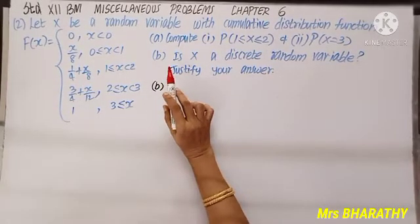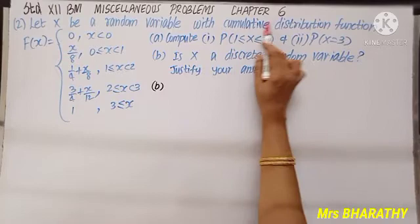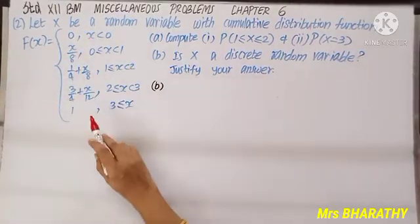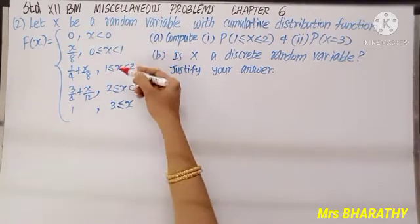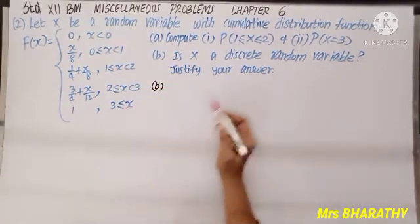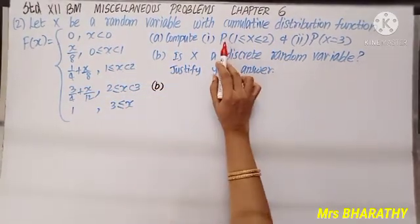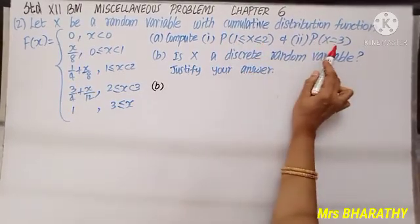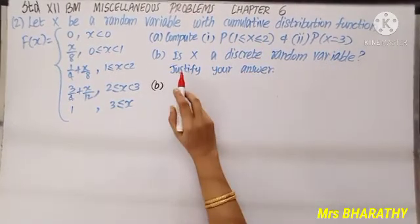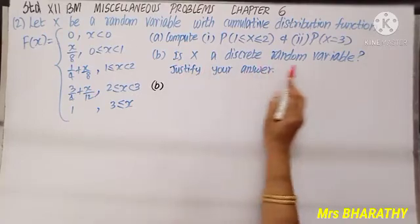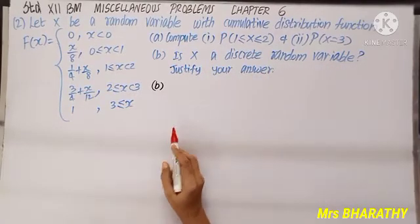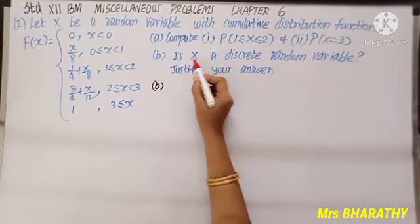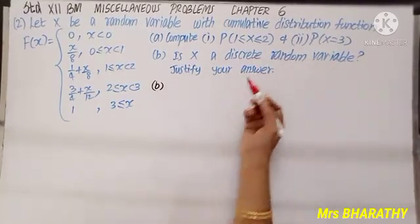Question number 2: let X be a random variable with cumulative distribution function F(x) given for various intervals. We need to compute P(1 ≤ X ≤ 2) and P(X = 3). Part b asks: is X a discrete random variable? Let us do part b first.